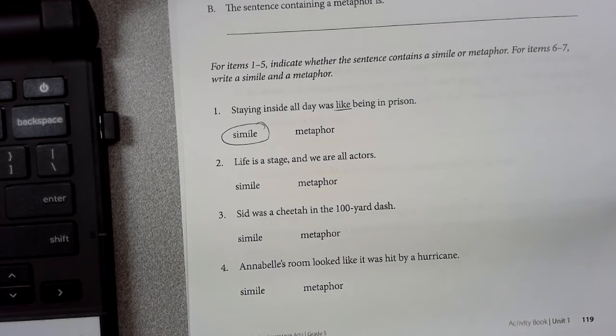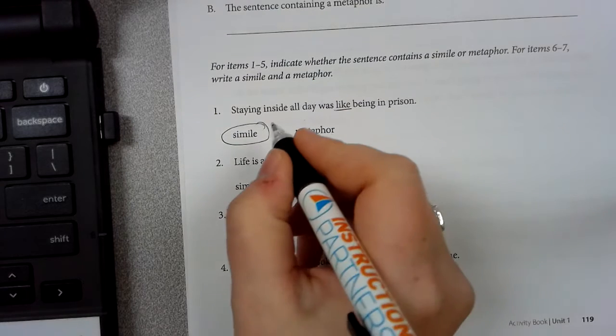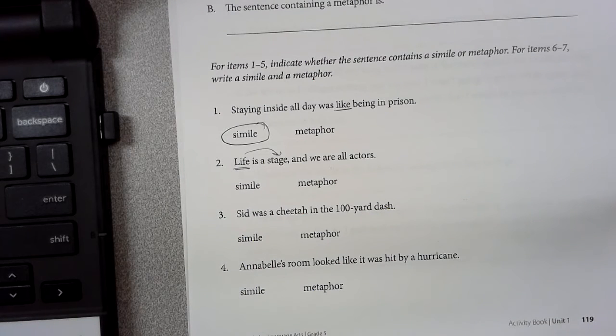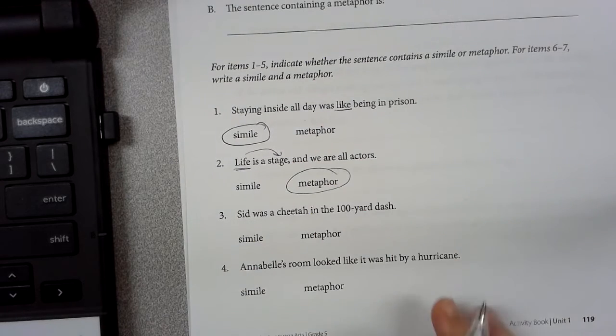Now this little line came from Shakespeare: life is a stage and we are all actors. So what is happening in this one? The person is comparing life to a stage, and they did not use like or as, so it is a metaphor.